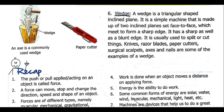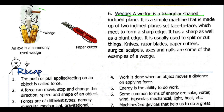Next we see the wedge. A wedge is a triangle-shaped inclined plane. Examples include knife, razor blades, and cutters. All these things have sharp edges — because of that shape they can cut things.